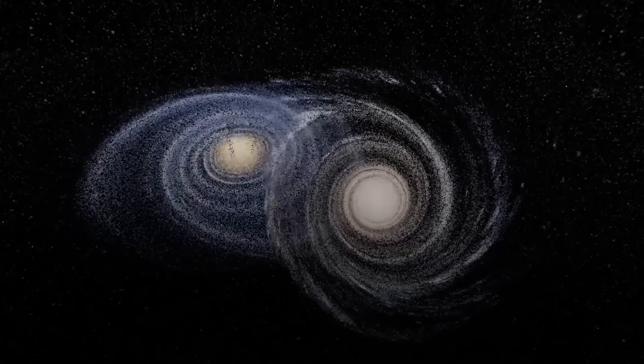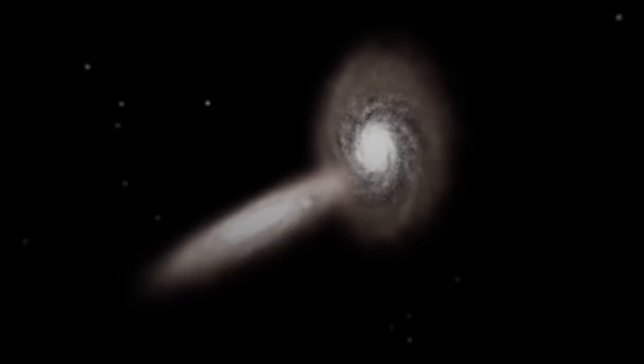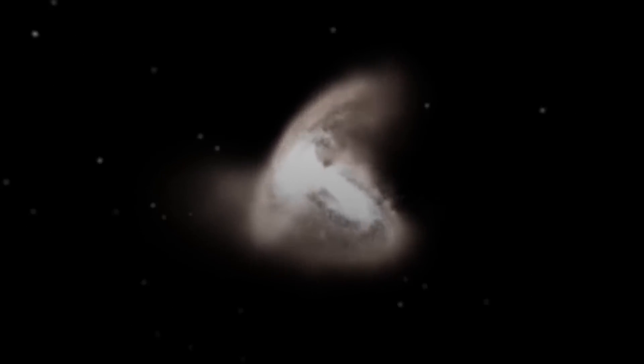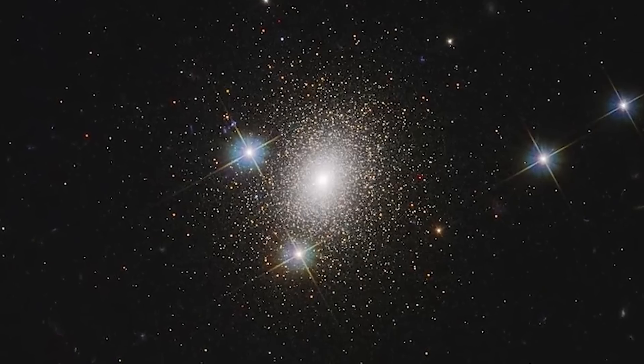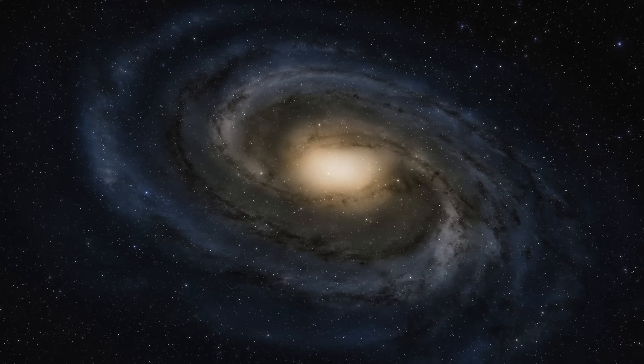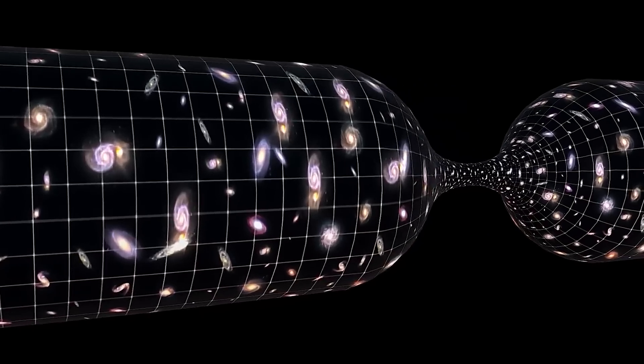As a result, when galaxies merge, stars often do not collide. Nonetheless, the merger will have an impact on the stars of both the Andromeda Galaxy and our own Milky Way. A trillion stars make up the Andromeda Galaxy. Meanwhile, the Milky Way has approximately 400 billion stars. Both galaxies' stars will be pushed into new orbits around the newly combined galactic center.